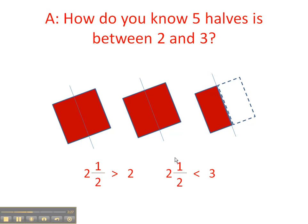On the other hand, we know that two and a half is not quite three because it's not three. It's two and a half. So it's almost three. So therefore, we know that five halves is between two and three because it's more than two but less than three.